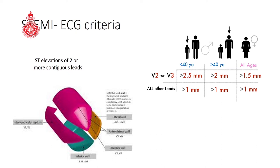Regarding STEMI ECG criteria, two key facts to highlight: ST elevations must be present in two or more contiguous leads and must be truly significant. In V2 to V3 leads, significance means more than 2.5 mm in males under 40 years, more than 2 mm in males 40 and over, and more than 1.5 mm in females. In all other leads except posterior leads, significance is more than 1 mm. In posterior leads, 0.5 mm is considered significant.